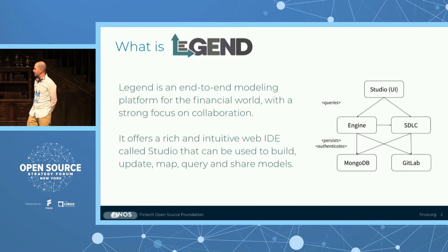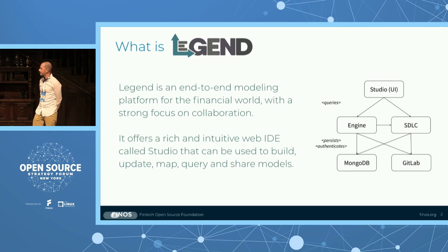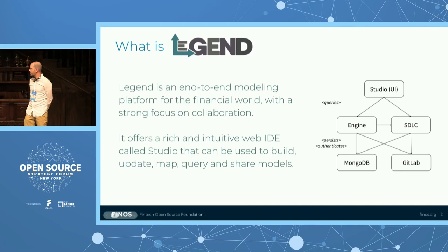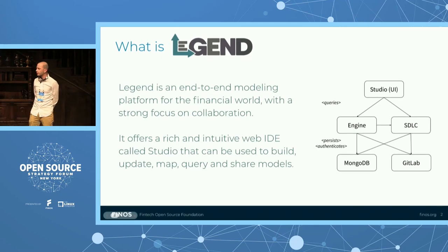It is a microservice architecture composed of several components. The core components we're looking at are: Studio, which is the UI you use on a web browser, backed by two other components — one called the Engine and the other called SDLC. The backend layer is composed of a MongoDB instance and GitLab. GitLab can be used as a SaaS offering at GitLab.com, or you can spin up your own GitLab Community or Ultimate Enterprise version.